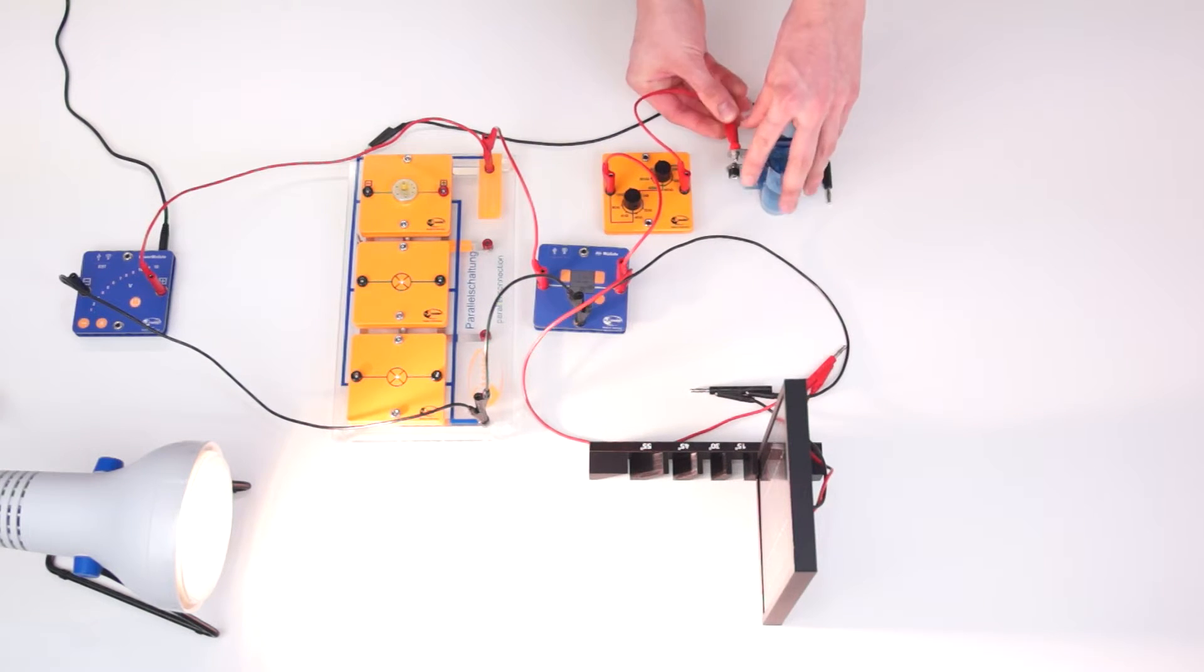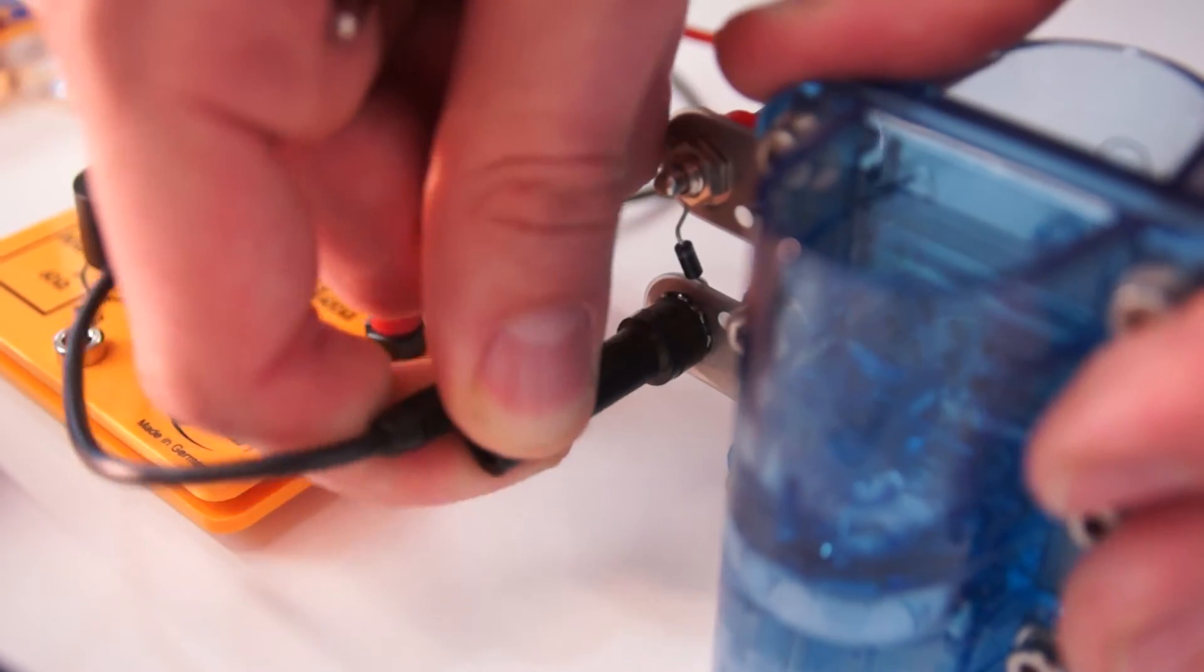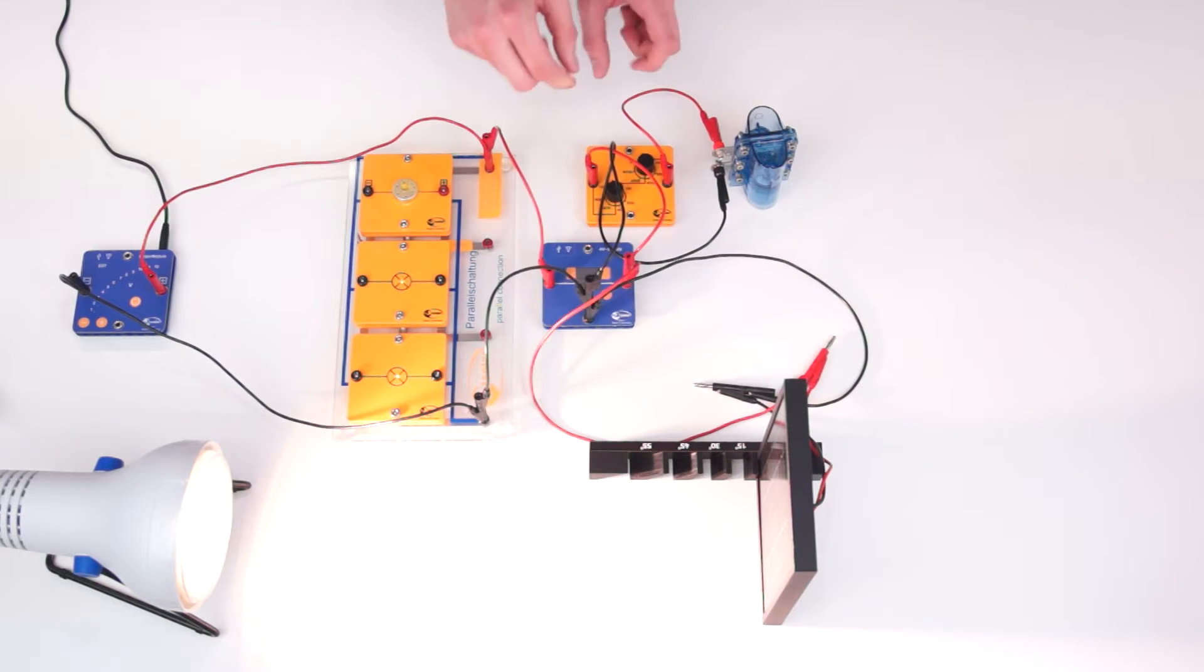The reversible fuel cell is able to store energy by converting water into hydrogen and oxygen and release it through the reverse process again. The resistor serves for the regulation of the energy supply.